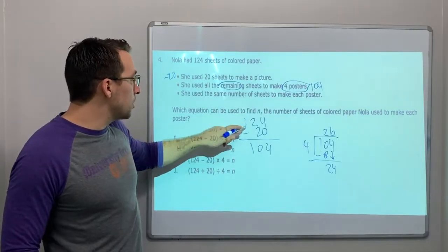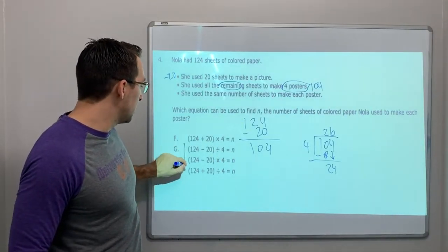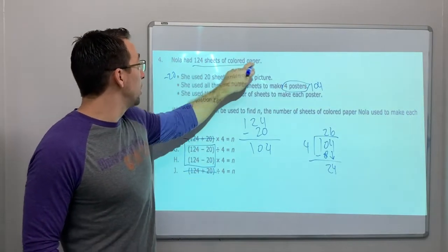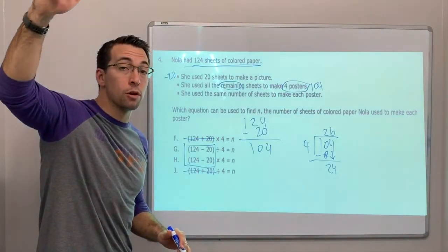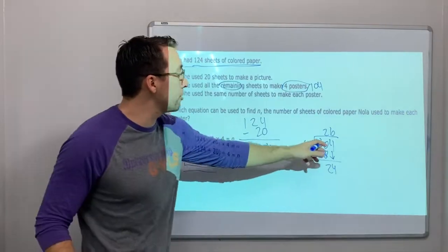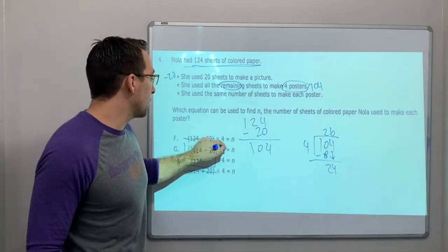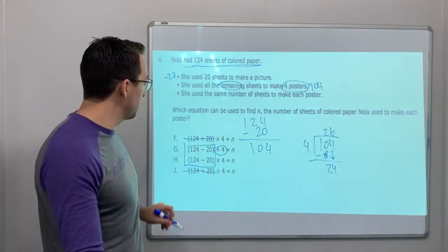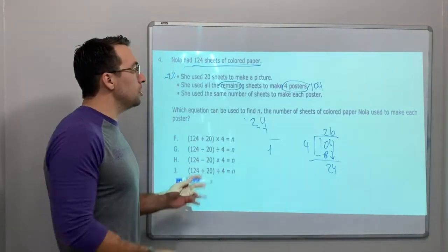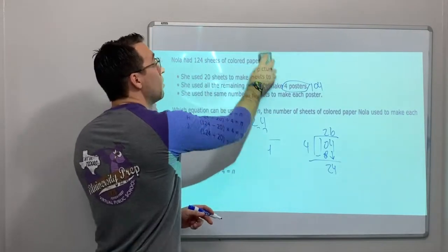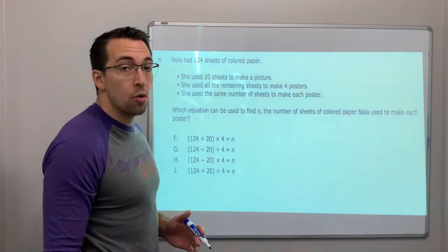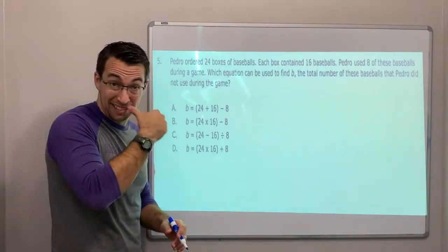So 124 minus 20. We know that's wrong and that's wrong because she started with 124. She subtracted 20 for the picture and then she made 4 posters with the 104 papers, divided by 4 because there's 4 different posters. So this cheat code is all about, you don't even have to do the math. You just have to understand how to get the answer. You have to understand how the numbers go together and you need to know which operation to use.